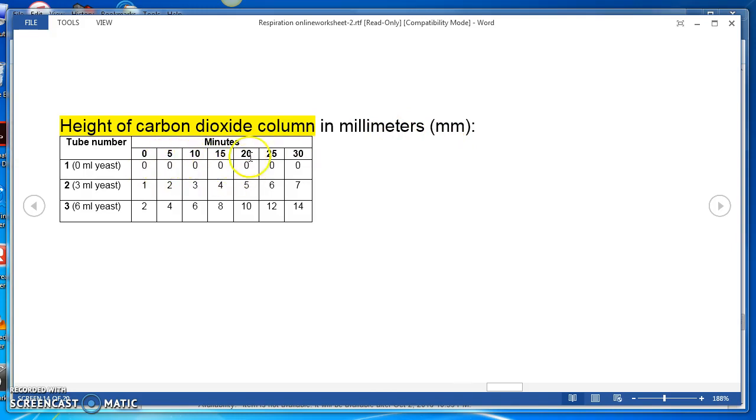So as the different minutes pass, as a result, you get so many milliliters of carbon dioxide being captured in the tube for each of the three tubes. You can use that information.